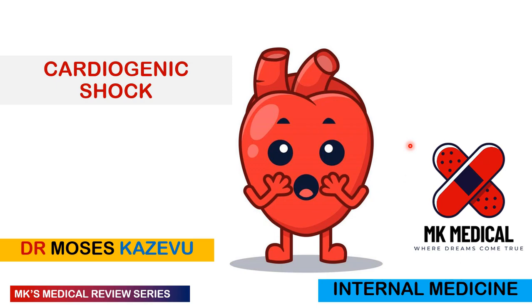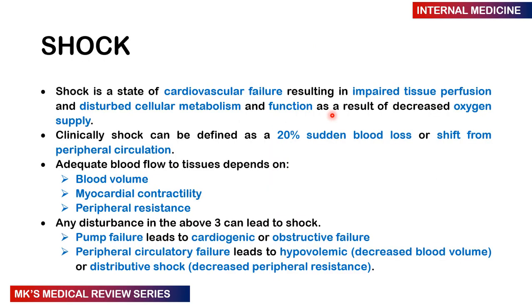If you didn't watch the video on hypovolemic shock, I will leave a card right here that you can click and watch before you watch this video. I'll also leave it tagged at the end of this video. When we talk about shock, remember there's a cardiovascular failure because the body is supposed to be perfused with blood carrying oxygen and nutrients for the purposes of metabolism, growth, and survival. When there's a failure of the cardiovascular system to perfuse the tissue, this results in disturbed cellular metabolism and function, as a result of decreased oxygen supply.